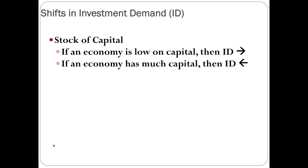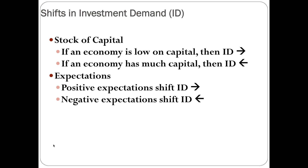Stock of capital is another determinant. If an economy is low on capital — factories, tools, and that kind of stuff — then more investment is needed to create it, so the investment demand curve shifts right. If an economy already has a plethora of capital, the curve shifts left. Finally, expectations: positive expectations encourage investment and shift the curve right, while negative expectations shift the investment demand curve to the left.